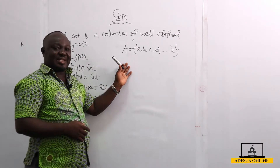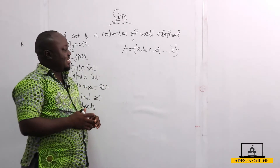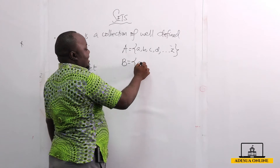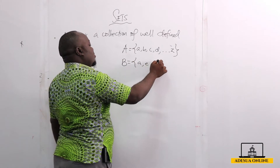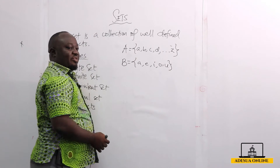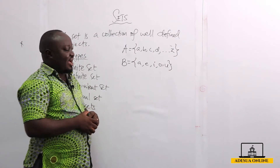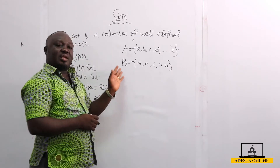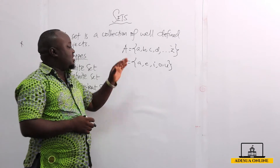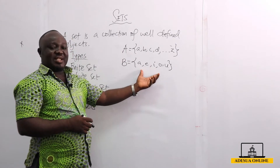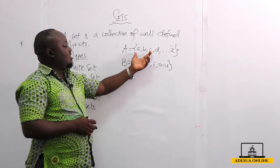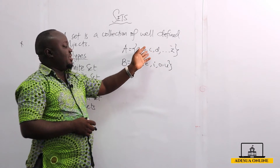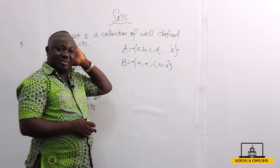We can represent that as the set of English alphabets. If I want to represent vowels, I can say B is equal to A, E, I, O, U. This is the set of vowels in the English alphabet. Normally we represent sets by using capital letters, and the members or elements of that set are listed inside. This set A contains A, B, C, D up to Z, described as the set of English alphabets, and B contains the vowels.